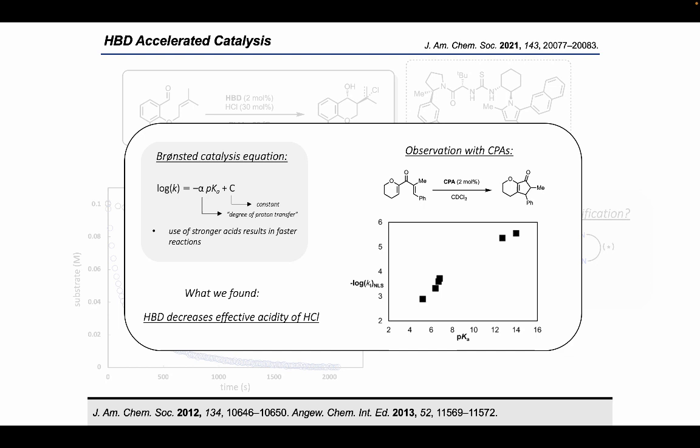Ultimately we found that while the reaction in the presence of the H-bond donor does exhibit a significant rate accelerating effect, the catalyst in fact decreases the effective acidity of HCl. So let me walk you through some experiments that we did to nail down how this was actually happening.